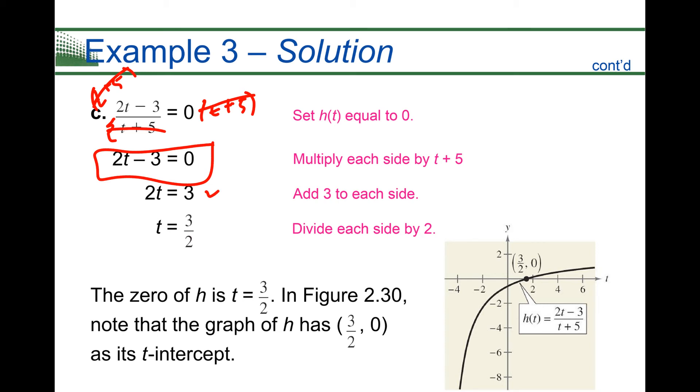Well, that's something we can solve. You add three over and that gives me 2t equals 3, and then divide by two to get my zero of three over two. So the zero of h is t equals three halves. And so you can see that in this figure, this would be the x-intercept. They're calling it t-intercept because we're working with t. But again, same process that we've been doing. We're just putting it on a graph.